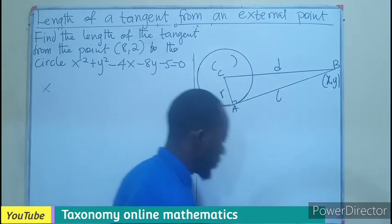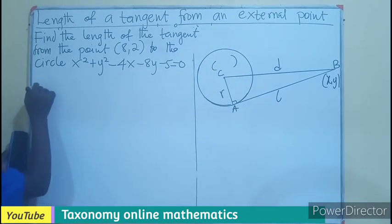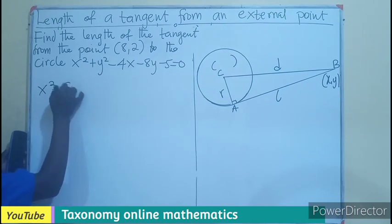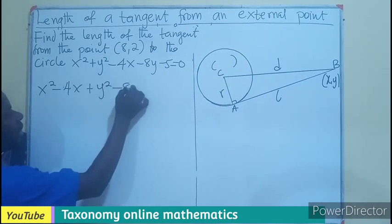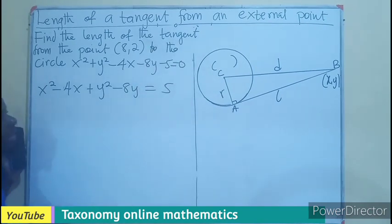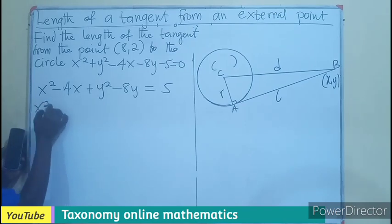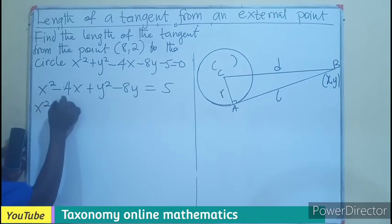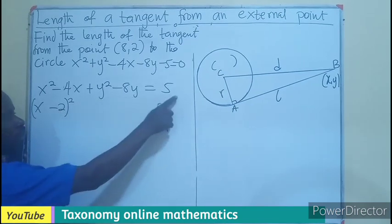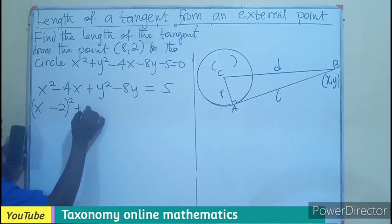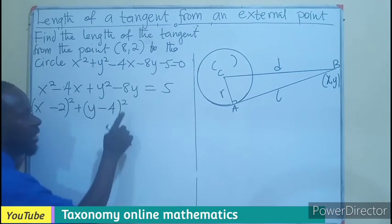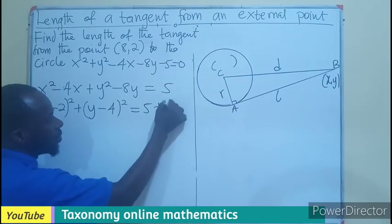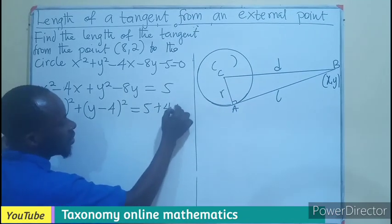We are going to have x squared minus 4x plus y squared minus 8y equals 5, sending the 5 to the other side. We complete the square of this. That will give you x squared minus 2, half of this, squared, then the square of the 2 will give us 4. So 4 will be going to the other side. Then we have plus y minus 4, half of this, all squared. Then equals 5, 4 squared will be 16.